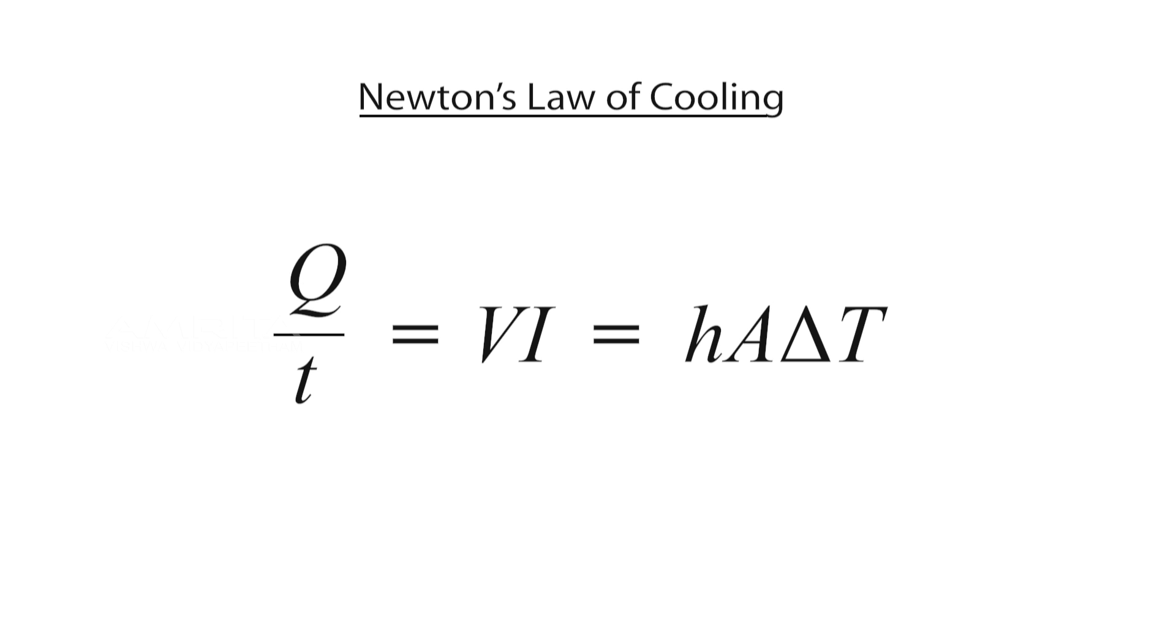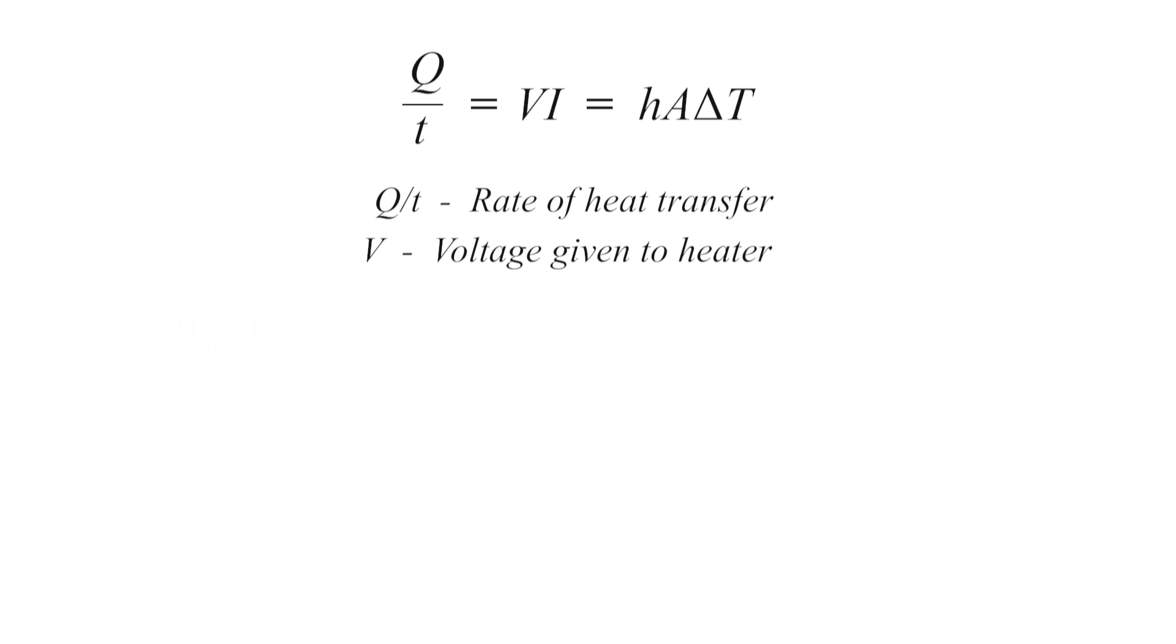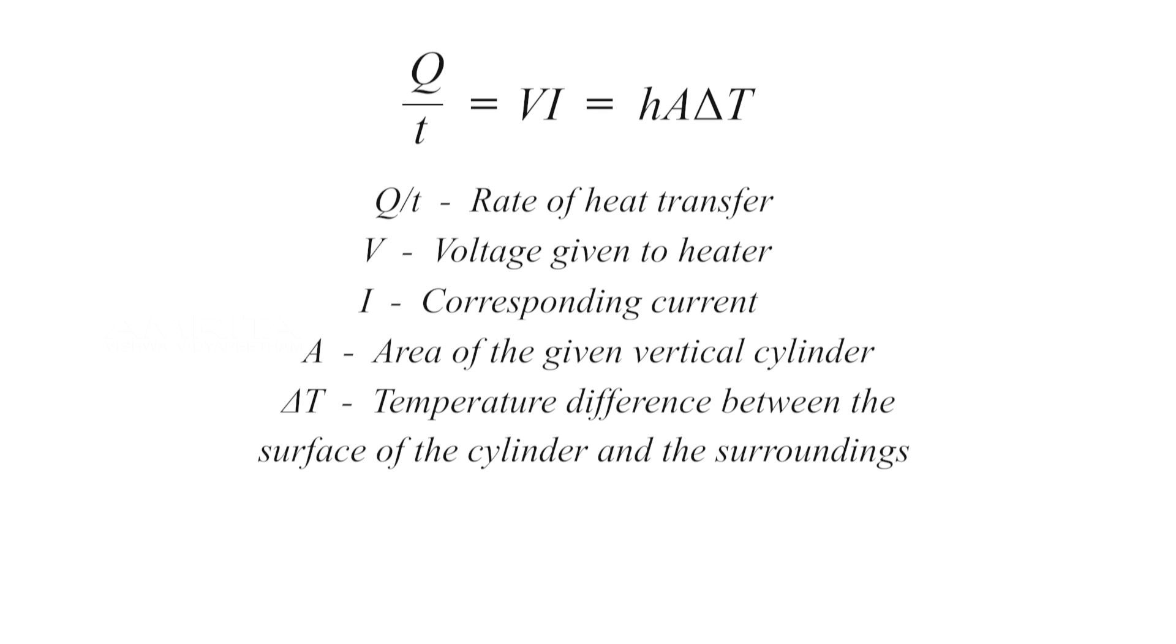Newton's law of cooling expresses the overall effect of convection by Q/t = VI = hAΔT, where Q/t is the rate of heat transfer, V is the voltage given to heater, I is the corresponding current, A is the area of the given vertical cylinder, ΔT is the temperature difference between the surface of the cylinder and the surroundings, and h is a convection heat transfer coefficient.